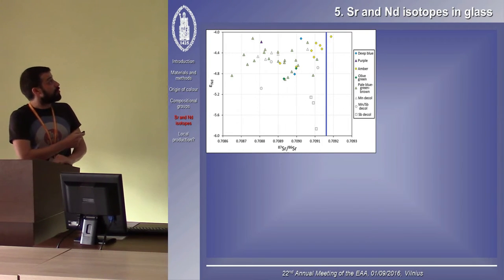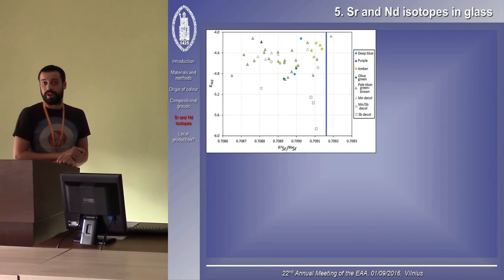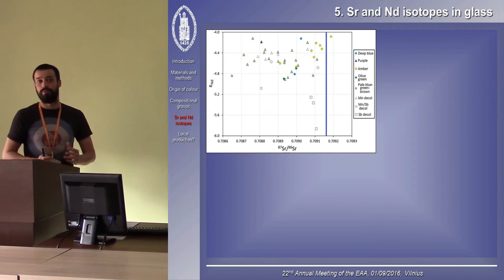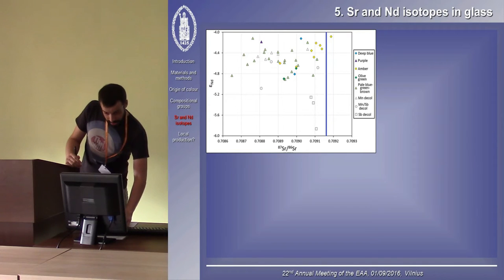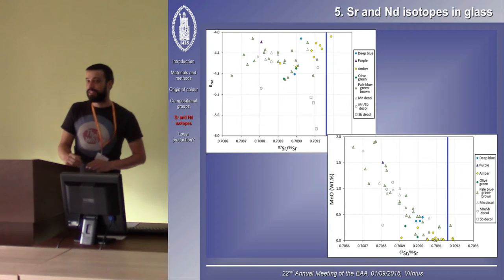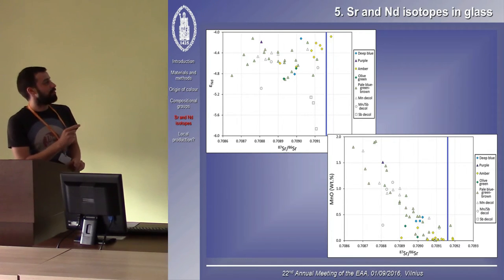The strontium isotope signature in the other glasses appear to be much more varied. We might interpret this as saying that there was a variety of different lime-bearing material in the sand, but when we take the manganese concentration in these glasses into account, we actually get a different story.